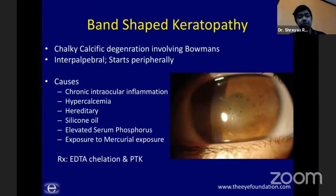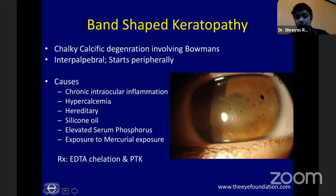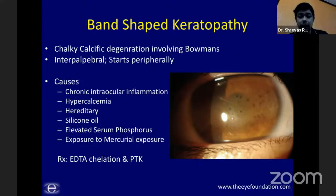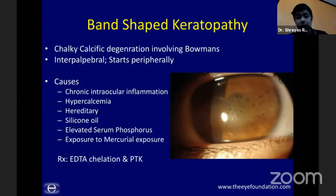Band-shaped keratopathy is a calcific degeneration involving Bowman's layer with a typical Swiss-cheese appearance in the interpalpebral region. It starts peripherally then progresses centrally. Common causes include chronic uveitis such as JIA, silicone oil in the eye, elevated calcium or serum phosphorus, and mercury exposure. Treatment involves EDTA chelation, followed by PTK to improve corneal clarity for any residual haze or scarring underneath.